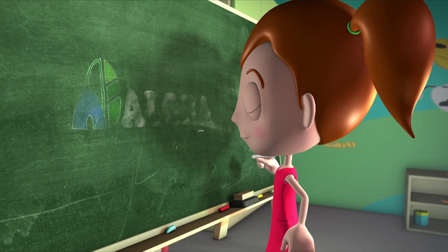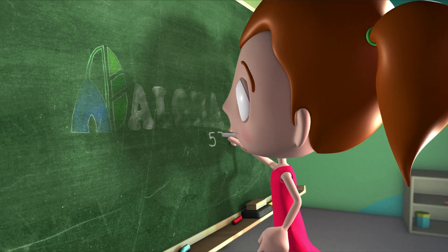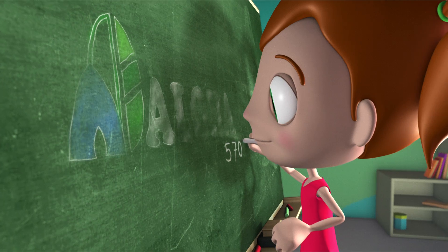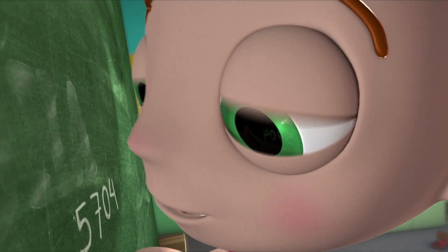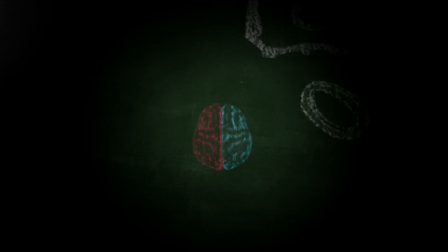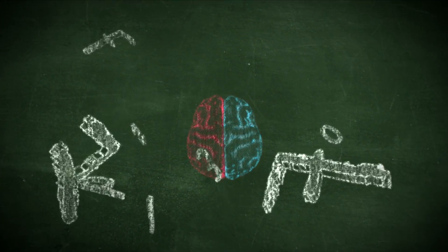To understand how the Aloha Mental Arithmetic Program affects children's mental development, we need to know how the two hemispheres of our brain work. All numerical stimuli received are directly processed in the left hemisphere.